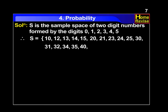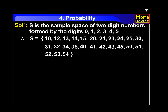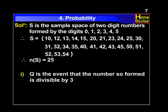40, 41, 42, 43, 45, 50, 51, 52, 53 and 54. Therefore, n of S is equal to 25. Now Q is the event that the number so formed is divisible by 3.